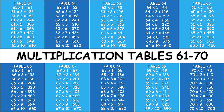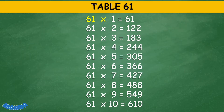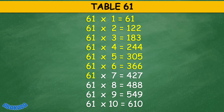Abacada Multiplication Table 61 to 70. Table 61: 61 times 1 equals 61, 61 times 2 equals 122, 61 times 3 equals 183, 61 times 4 equals 244, 61 times 5 equals 305, 61 times 6 equals 366, 61 times 7 equals 427, 61 times 8 equals 488, 61 times 9 equals 549, 61 times 10 equals 610.